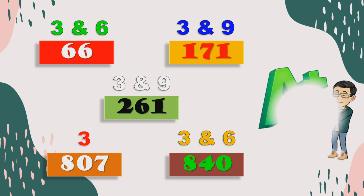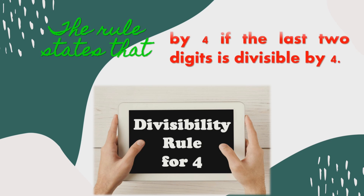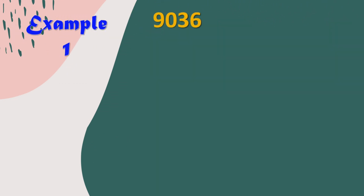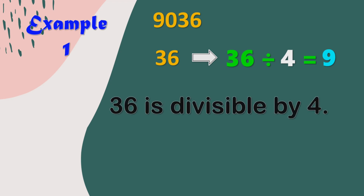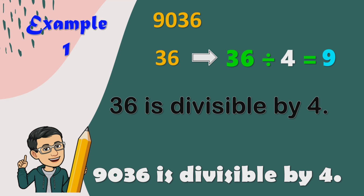Did you get a perfect score? This time, we are going to learn about the divisibility rule for 4. The rule states that a number is divisible by 4 if the last two digits is divisible by 4. For example, we have 9036. The last two digits of 9036 is 36. We are going to divide 36 by 4, and that is 9. We can say 36 is divisible by 4. Since 36 is divisible by 4, then 9036 is divisible by 4.